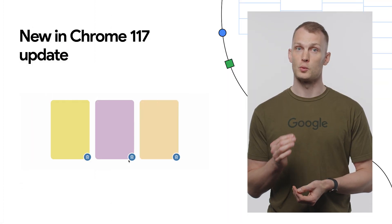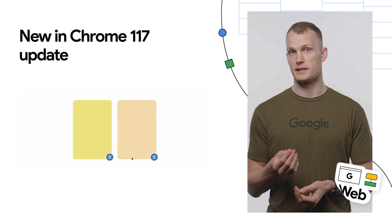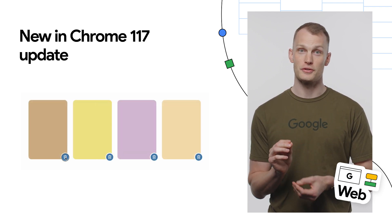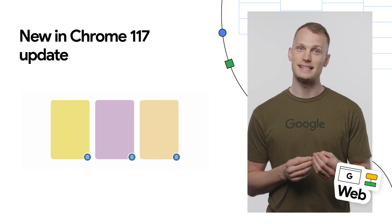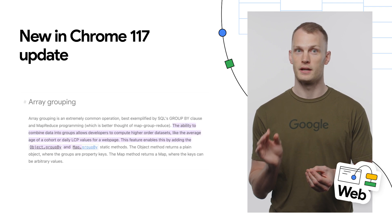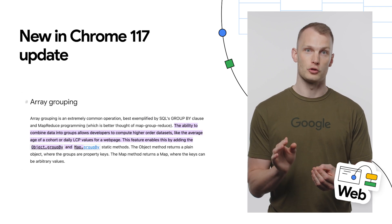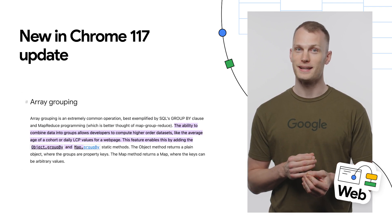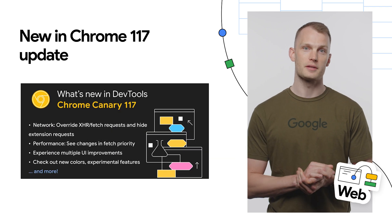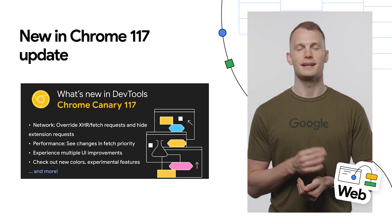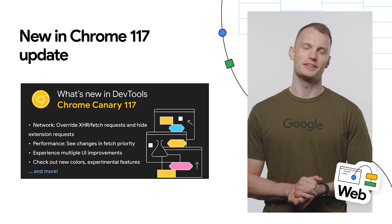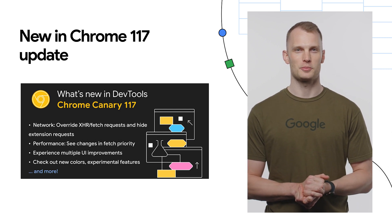On the Chrome side for the 117 release, we have three new CSS features that make it easy to add smooth entry and exit animations, array grouping to compute higher order data sets, dev tools to make local overrides easier, and plenty more. For the full details, check out the video linked in the description.